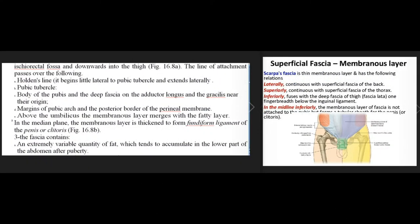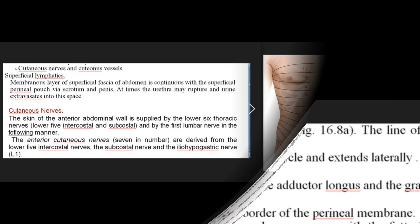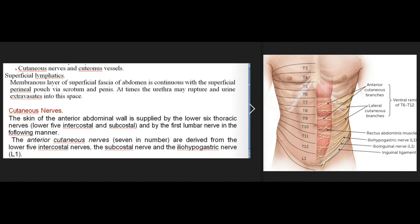The line of attachment passes over the following: Holden's line, beginning a little lateral to the pubic tubercle and extending laterally; the body of the pubis and the deep fascia on the adductor longus and the gracilis near their origin; and the margins of the pubic arch and the posterior border of the perineal membrane. Above the umbilicus, the membranous layer merges with the fatty layer. In the median plane, the membranous layer is thickened to form the fundiform ligament of the penis or clitoris. The fascia contains a variable quantity of fat, which tends to accumulate in the lower part of the abdomen after puberty, and cutaneous nerves and cutaneous vessels.